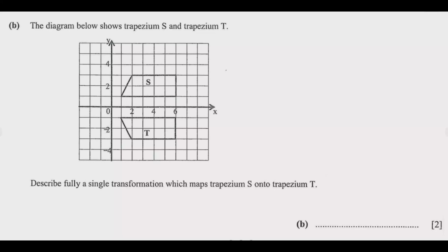Let us look at question 9b. The diagram below shows trapezium S and trapezium T. Describe fully a single transformation which maps trapezium S onto trapezium T. So you know this is a transformation.